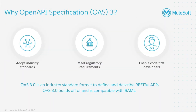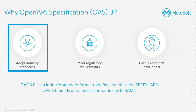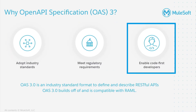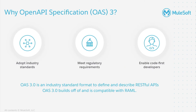So why is MuleSoft looking to support OAS 3? There are three main reasons. We want our customers to be able to adopt industry standards, meet any regulatory requirements, and enable their code-first developers to generate API specifications. We recognize that although RAML is our favorite API description language and has widespread adoption by MuleSoft developers, OAS 3 has greater adoption overall in the market. Because of this, we want to make sure that developers have the option to choose the API specification format they prefer and adopt industry standards like OAS 3.